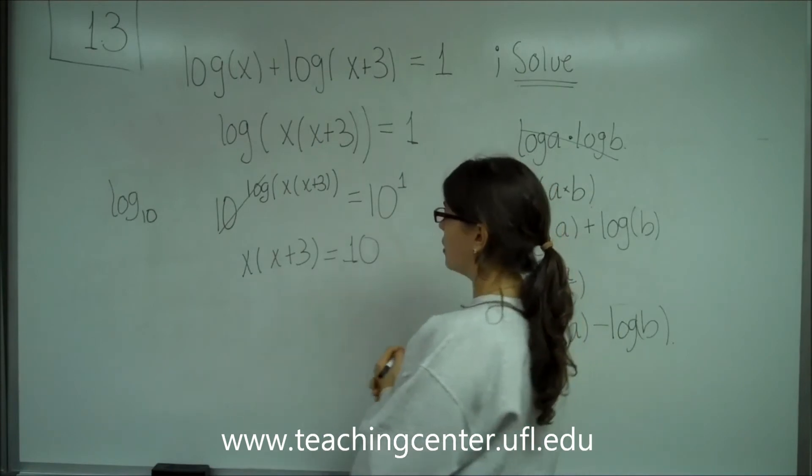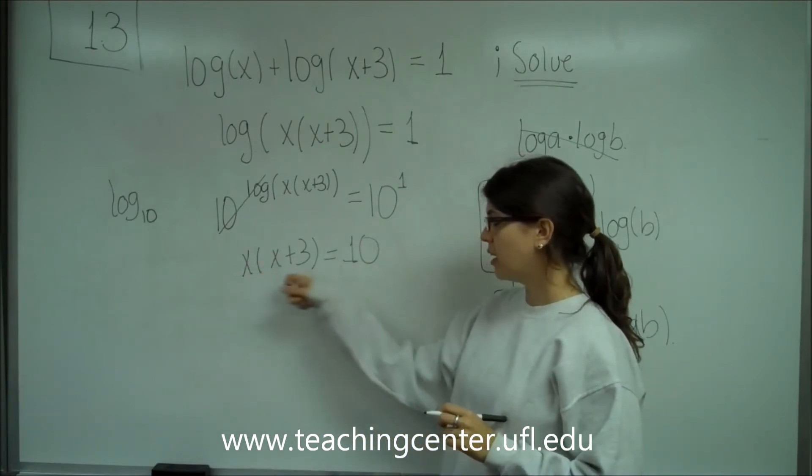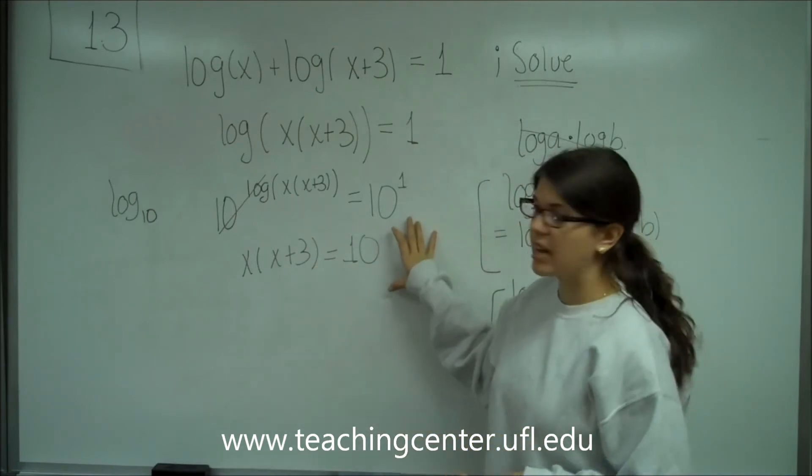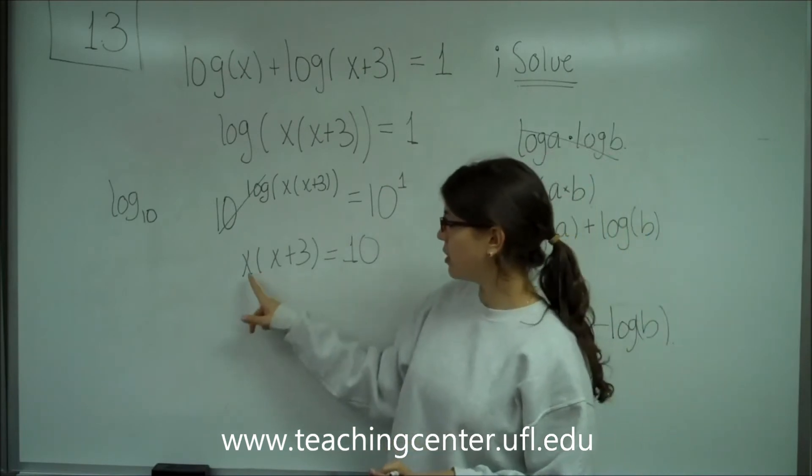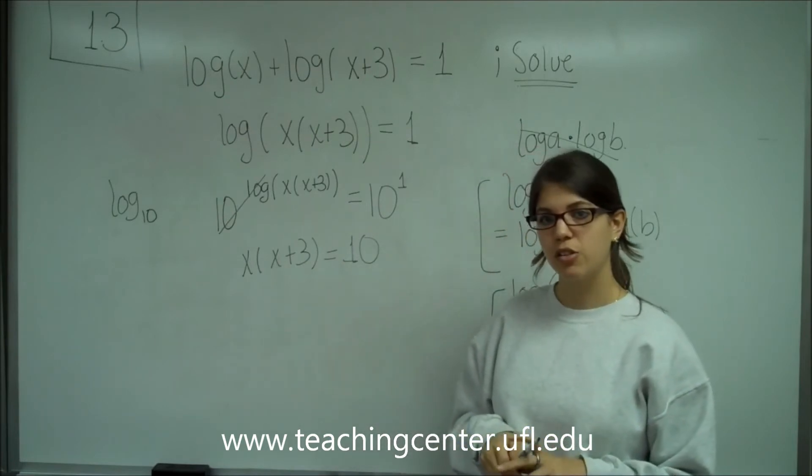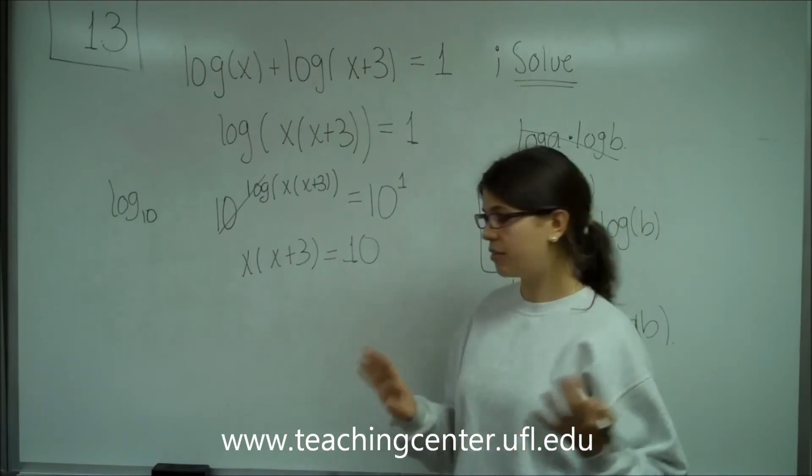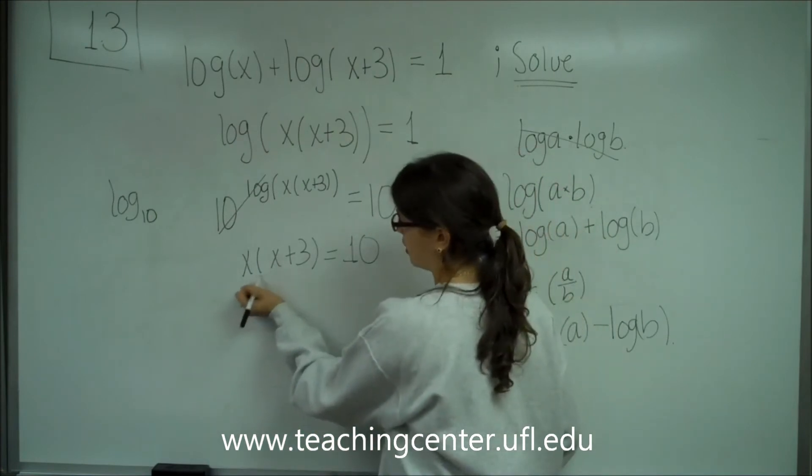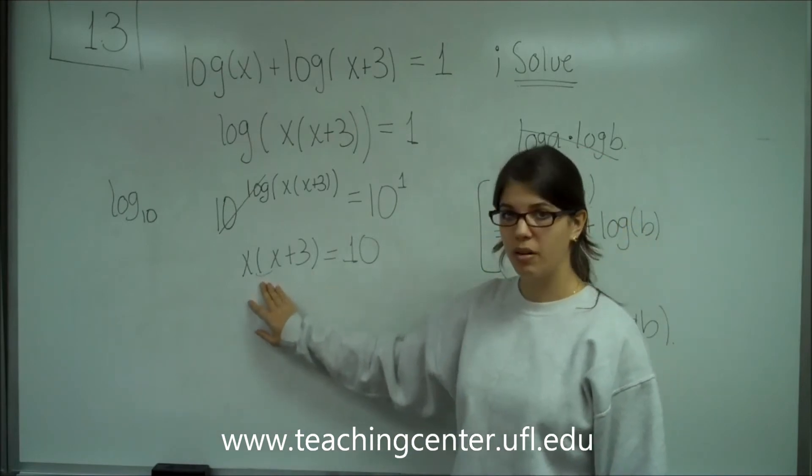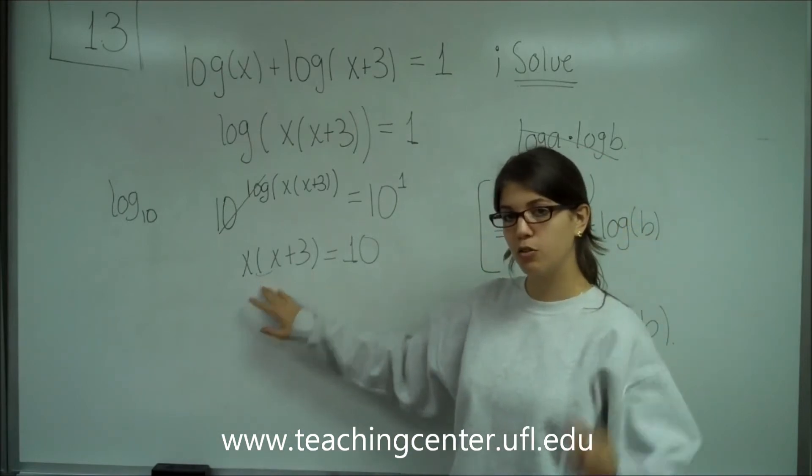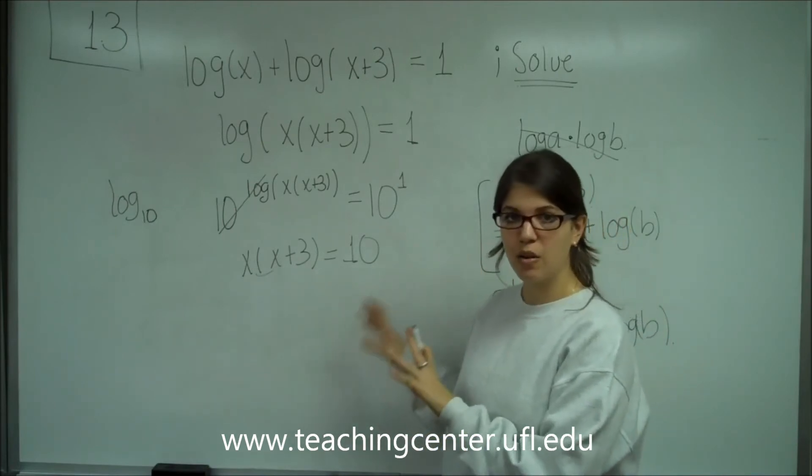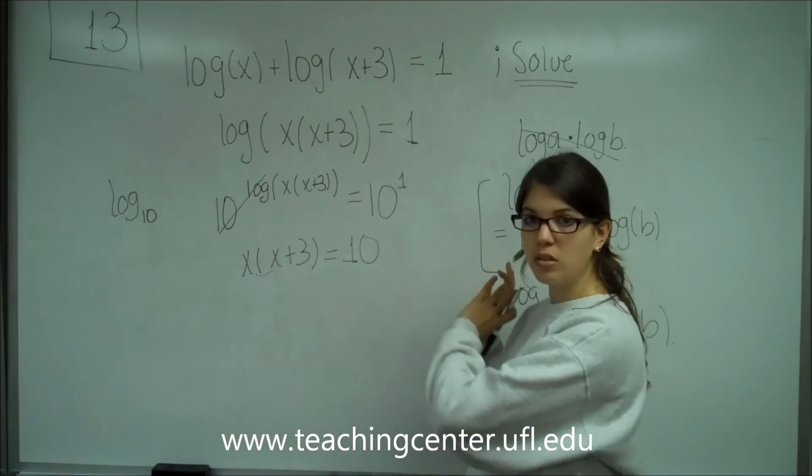So notice that here we can't just say x equals 10 and x+3 equals 10. We only do that when one side is zero. And if we multiply these out, we see that this is going to become some sort of quadratic equation. So we're going to end up having to factor. And that's what we have to see here. There's two x's that are going to get multiplied. So we're going to get this to be x², which means we're going to have to factor. In order to factor, we need to multiply everything out and put all the x's and all the numbers on one side and then equal to zero on the other side.